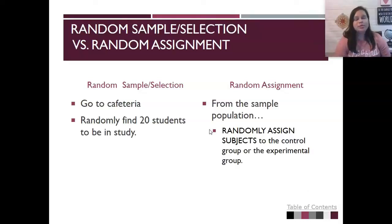Random sample, sometimes called random selection versus random assignment. The sample is how we're getting people from our total population. We're going to the cafeteria, randomly finding 20 students to be in the study. Random assignment has to do with once we have our sample population, we've got our 20 students. Now, if we're doing an experiment, we have to decide, are they going to be in the control group? Are they going to be in the experimental group? This way, we're going to randomly assign them to a control group or experimental group. This is going to be maybe just literally drawing names out of a hat or somehow a computer-generated list.